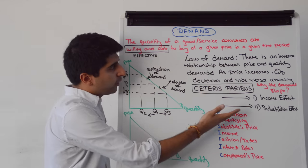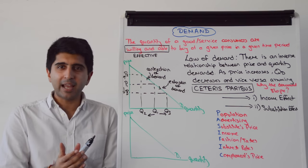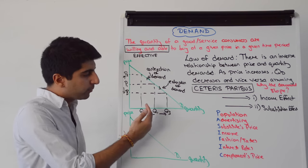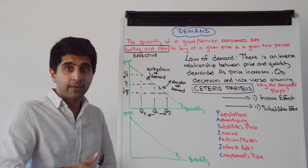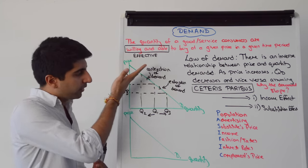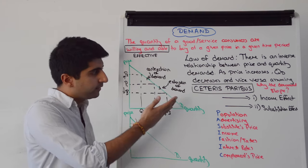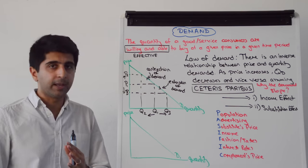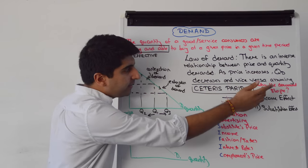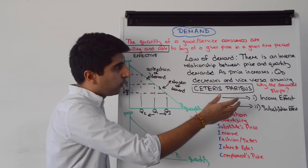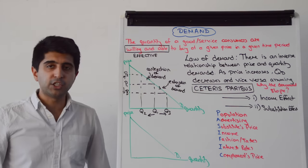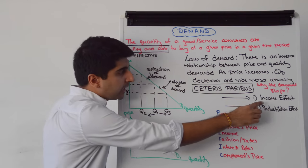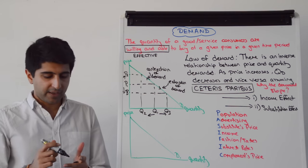So we understand the law of demand and the inverse relationship. When prices go up, quantity demanded goes down — there is a contraction of demand. When prices go down, quantity demanded increases — there is an extension of demand. But why? What explains this inverse relationship? Well, there are two effects that explain it: the income effect and the substitution effect.